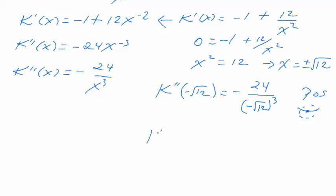So then we would plug in the square root of 12 into it. Square root of 12 raised to the third power. So this will be positive. Of course, we got the negative out here. So this is going to end up being a negative number. And that means negative remember meant concave down. So this will end up being a relative max there.